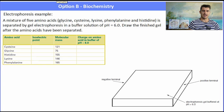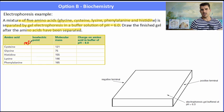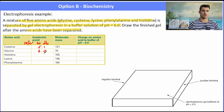So let's look at an example of electrophoresis. A mixture of five amino acids is separated by gel electrophoresis in a buffer solution of pH 6. Draw the finished gel after the amino acids have been separated. So what you need to do here is refer to the data book for the isoelectric point. So if you refer to the data book you'll see that cysteine has an isoelectric point of 5.1, glycine is 6, histidine is 7.6, lysine is 9.7 and phenylalanine is 5.5.